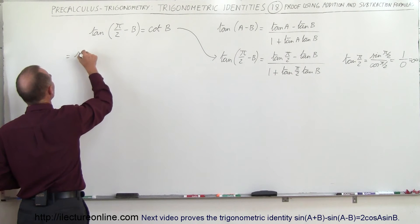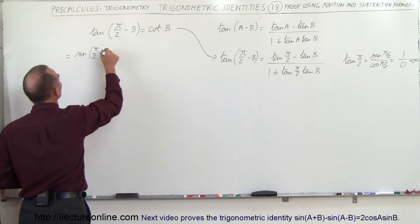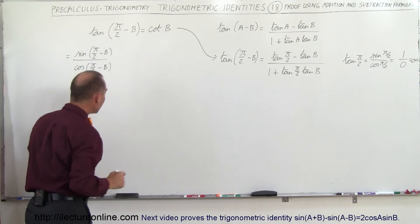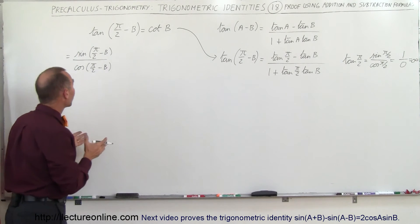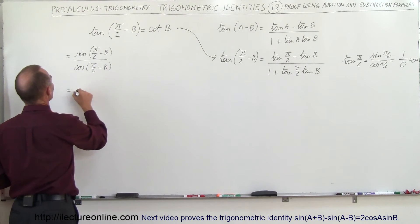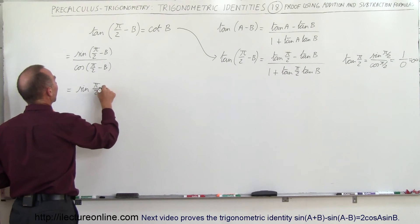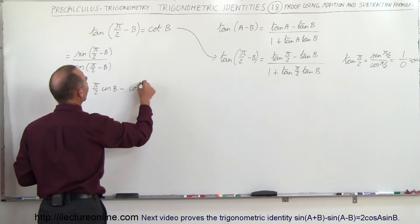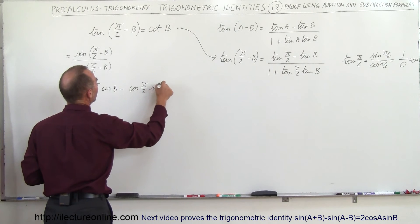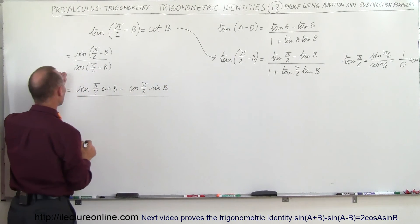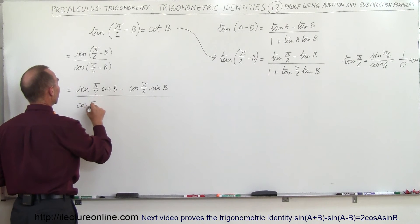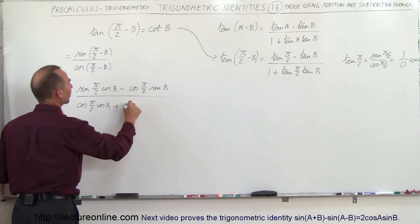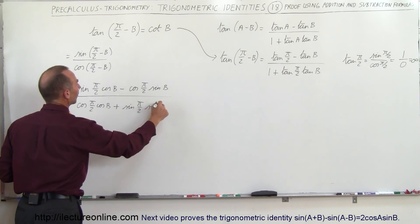This is equal to the sine of (π/2 minus b) divided by the cosine of (π/2 minus b). We then apply the difference of two angles formulas for sine and cosine. The numerator becomes the sine of the first angle times the cosine of the second angle, minus the cosine of the first angle times the sine of the second angle. The denominator becomes the cosine of the first angle times the cosine of the second angle, plus the sine of the first angle times the sine of the second angle.